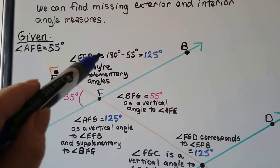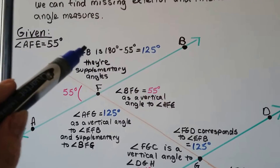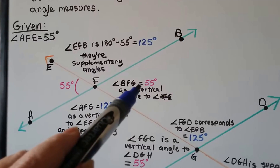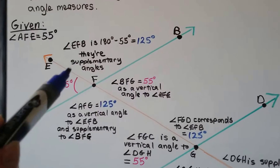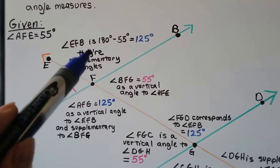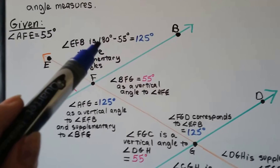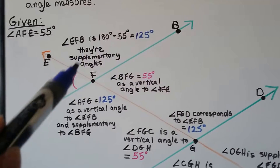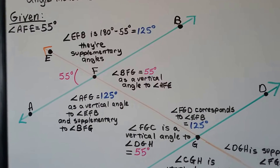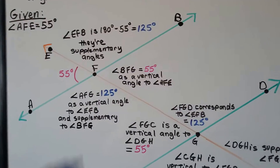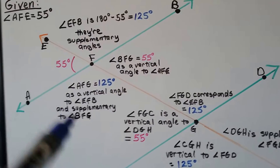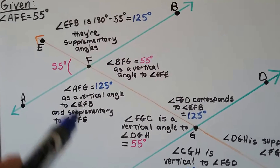Now we know this one's 125 degrees. If this one's 55 and this is its vertical angle, then this has to be 55. We could also say there's a supplementary angle here, so if that's 125, that has to be 55 in order for this to equal 180. And if that's 125, that has to be 125 because they're vertical angles — also supplementary with the adjacent ones.